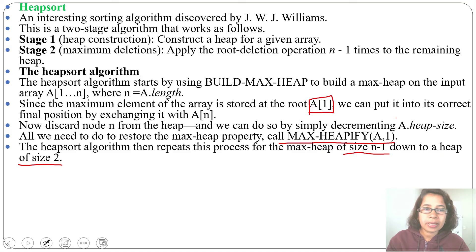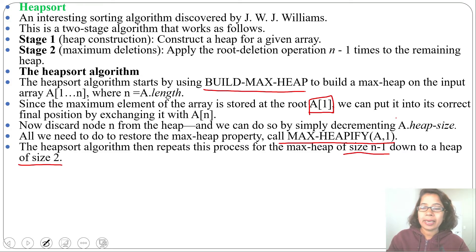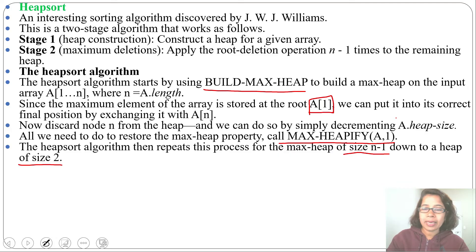So what we are doing in the HeapSort algorithm: first we create a heap by calling buildMaxHeap, then we swap A[1] with A[n] — the root with the last element — then we decrease the heap size and call MaxHeapify on A[1] to maintain the MaxHeap property. This process repeats from size n minus 1 down to size 2.